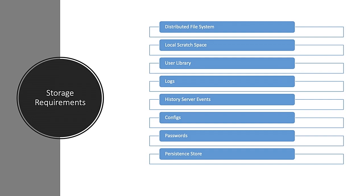You need a file system for local scratch space — for input/map output files and spilled RDDs on disk. This needs to be very fast and on local disk. You also need storage for user libraries: Conda packages if running Python (Conda has about a 6 GB footprint), your own Python packages, and any jars you want in your classpath.